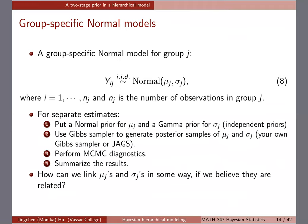Everything will be very similar to what we did before. You put a normal prior for mu_j and a gamma prior for 1 over sigma_j squared. You put independent priors there, and then you use Gibbs — either write it up yourself or use JAGS to generate posterior samples — then perform MCMC diagnostics and summarize the results.